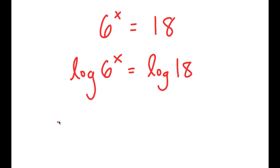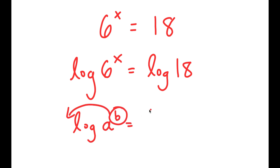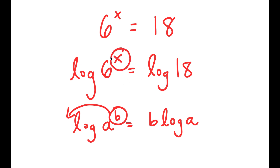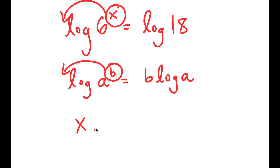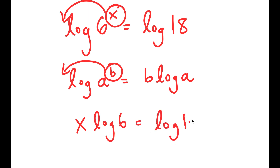Now, if I have something in the form log a to the power of b, I can move the exponent b to the front, so this turns into b times log a. In this case, I have log 6 to the power of x, and I can move x to the front, so I get x times log 6 is equal to log 18.